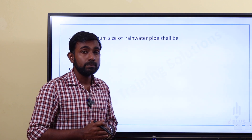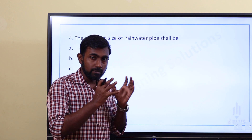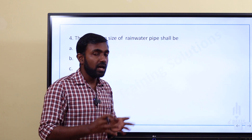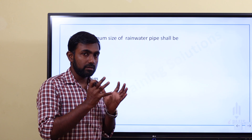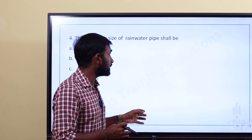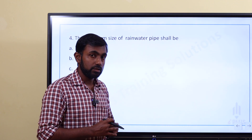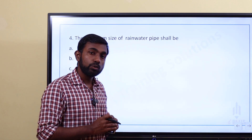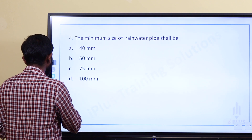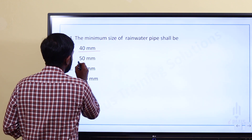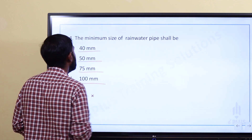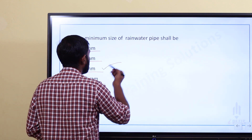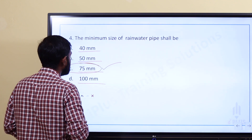The next question: what is the minimum size of a rainwater pipe? We call different types of pipes — soil pipe, rain pipes, waste water pipes. The options are: Option A: 40 mm, Option B: 50 mm, Option C: 75 mm, Option D: 100 mm. The minimum diameter of a rainwater pipe is 75 mm. That is the correct answer.